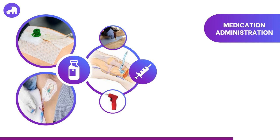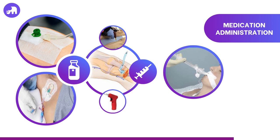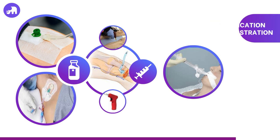In some rare instances, when all vascular access routes are unattainable, drugs can be administered via the endotracheal tube or ETT. However, this is not an optimal route due to uncertain absorption and possible requirement for higher doses. Dosages and drugs suitable for endotracheal administration might differ from those given IV or IO. Always consult and adhere to local guidelines and policies when considering ETT drug administration.